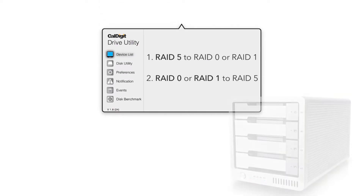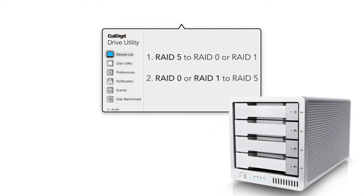In the first part of the video we'll be showing you how to go from a RAID 5 to a RAID 0 or RAID 1. In the second part we will show you how to go from a RAID 0 or RAID 1 to a RAID 5.